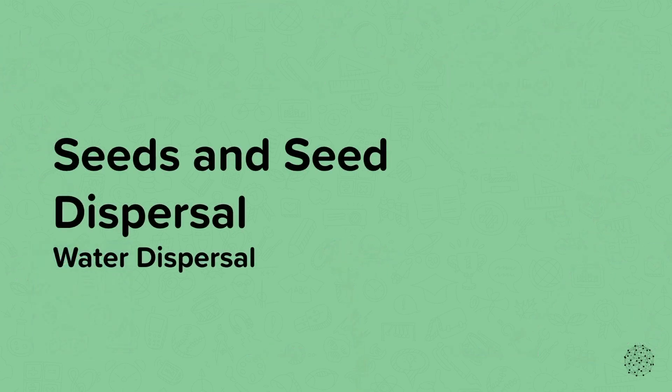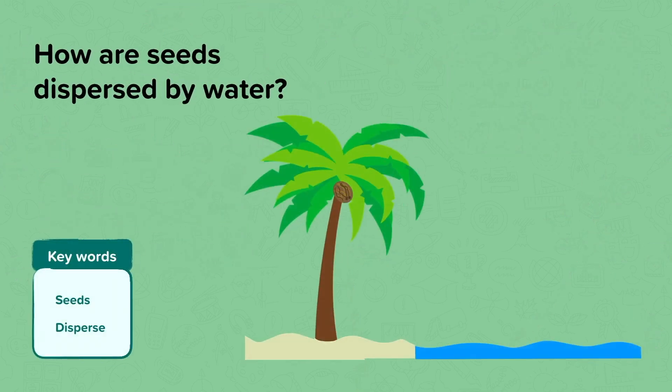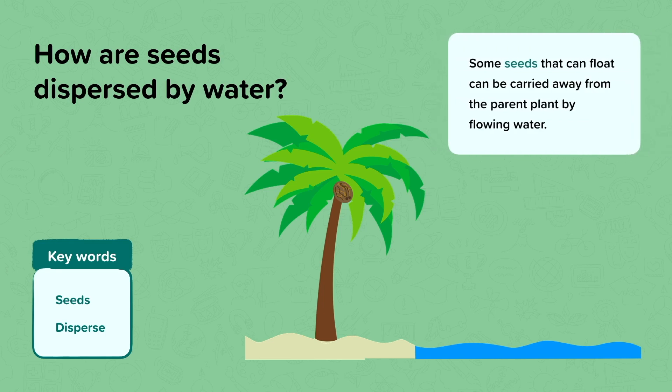Water dispersal. The seeds of a palm tree are called coconuts. They are found near the top of the tree. You may have eaten coconut or drunk coconut milk before. But how do you think the palm tree disperses its coconuts? Coconuts can float on water. So coconuts can be carried by flowing water away from the parent plant as they fall from the tree.